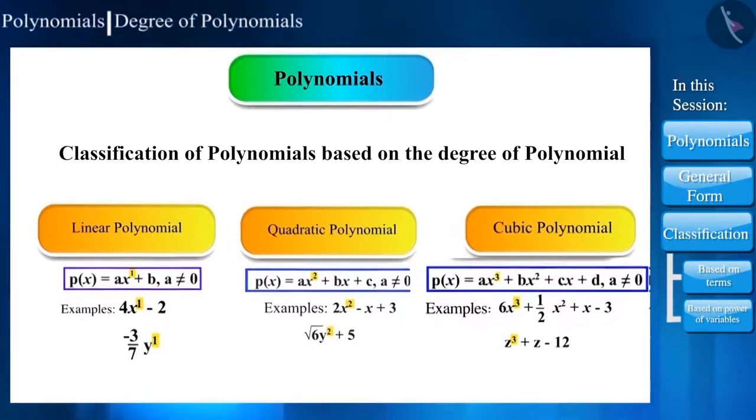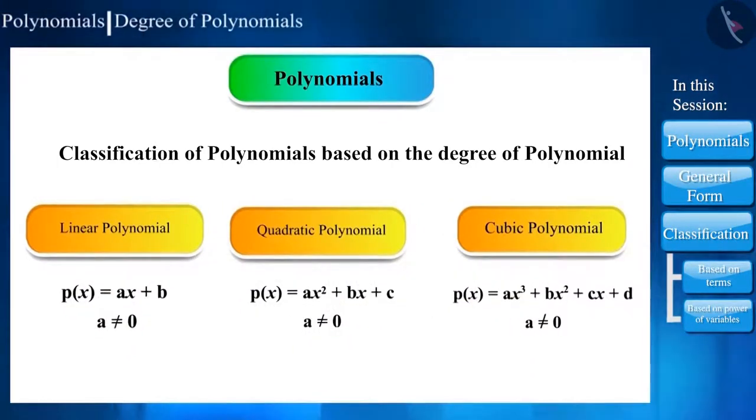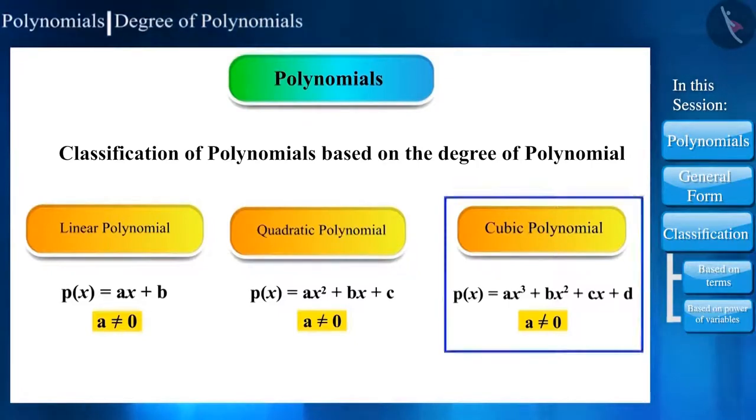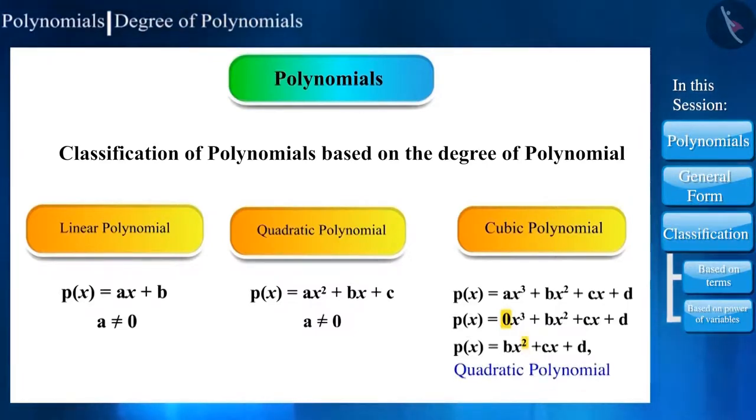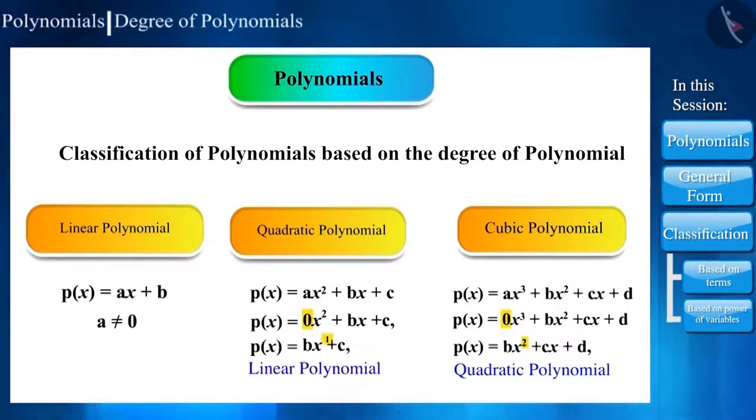Friends, if you observe the general form of these polynomials, it has been stated that a should not be 0. Do you know why? If a becomes 0, then the degree of polynomials reduces by 1. If in the general form of cubic polynomial, we put 0 in the place of a, then its degree reduces by 1 and becomes quadratic polynomial. Similarly, quadratic will become linear and linear will become constant polynomial.